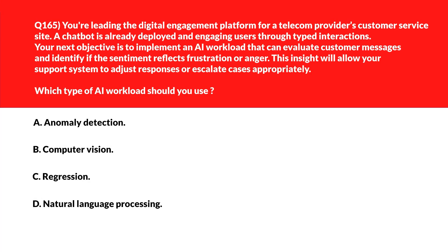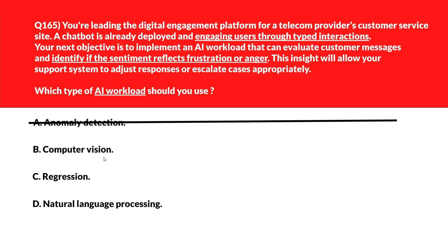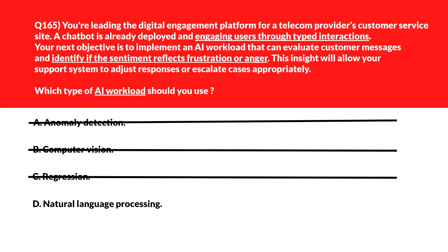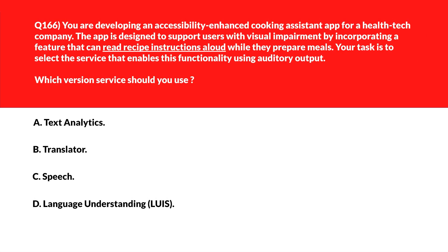We need to select the type of AI workload to identify sentiment reflecting frustration or anger. Option A: Anomaly Detection — this is not any kind of abnormal activity, so anomaly detection cannot help. Option B: Computer Vision — designed to process image-based input, not text-related chatbot conversations. Incorrect. Option C: Regression — used for predicting numerical outputs, not for interpreting written emotions. Wrong. Option D: Natural Language Processing — NLP interprets and analyzes language to assess emotional tone and detect user sentiment. Option D, NLP, is the right answer.